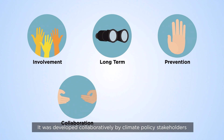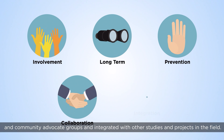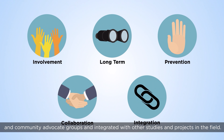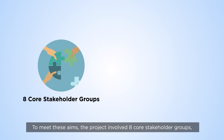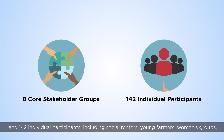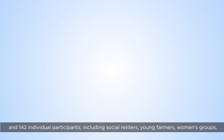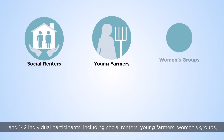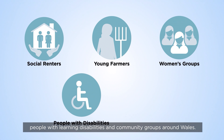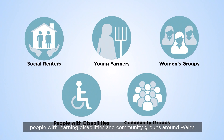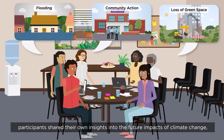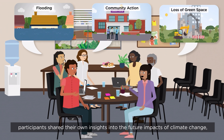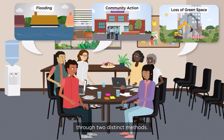The project was developed collaboratively by climate policy stakeholders and community advocate groups, and integrated with other studies and projects in the field. To meet these aims, the project involved eight core stakeholder groups and 142 individual participants, including social renters, young farmers, women's groups, people with learning disabilities, and community groups around Wales. Utilising activities run in workshops and storytelling competitions, participants shared their own insights into the future impacts of climate change through two distinct methods.